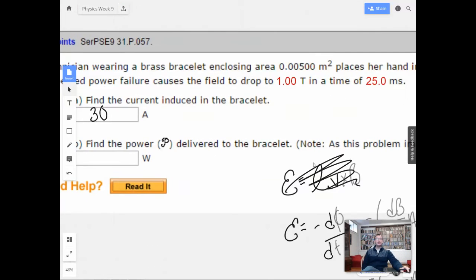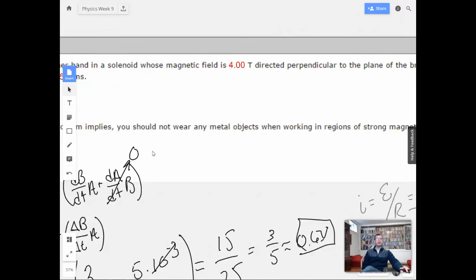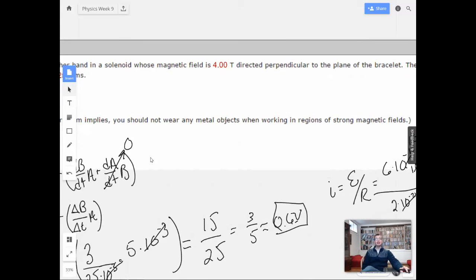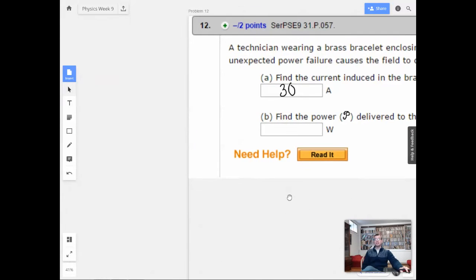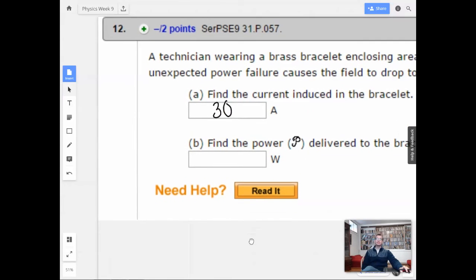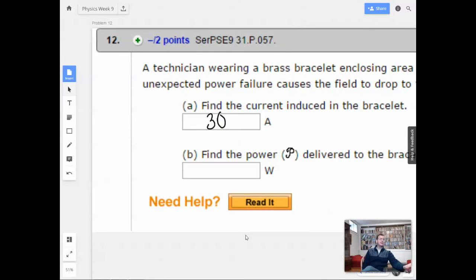So, find the power delivered to the bracelet. As this problem implies, you should not wear any metal objects when working in regions of strong magnetic fields. That seems reasonable. Oh, there's a fancy watch. Some fancy Rolex that's good for magnetic fields. Or at least it's advertised as such. I should look up what that is.